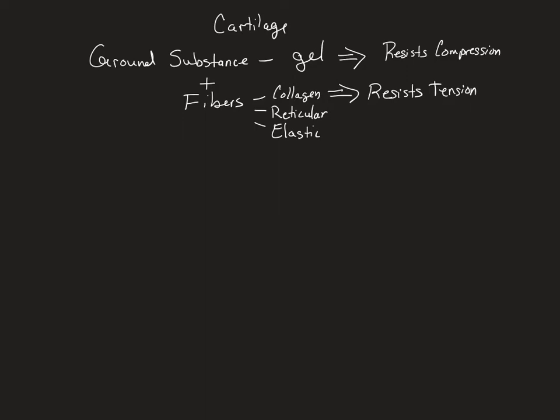Let's think about our cartilage. Cartilage is a type of connective tissue, which means it's got cells and it's got extracellular matrix. The ground substance and the fibers are the extracellular matrix. With our connective tissues, it's the change in ground substance and the quantities and types of fibers that determines the function of the tissue.